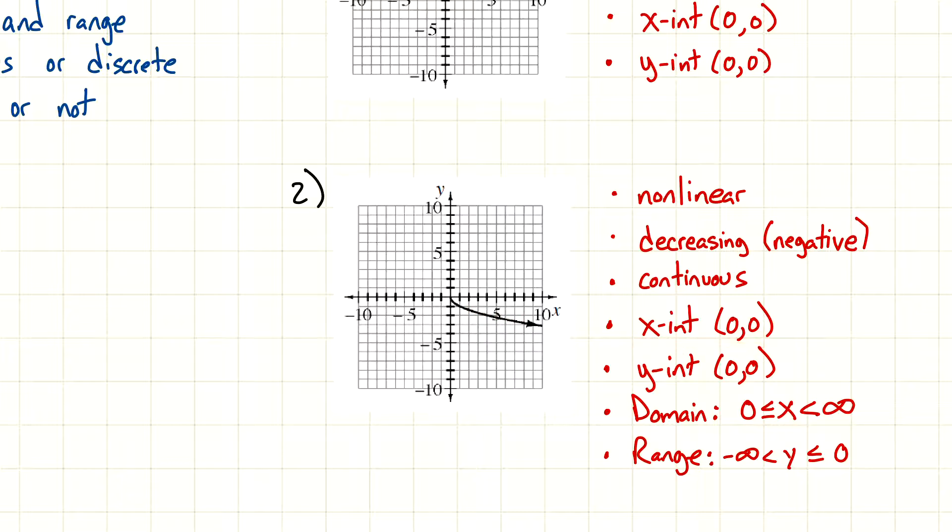And continuous, you'll notice it's a connected line. It's not a bunch of points that are not connected. X-intercept would be... This is the x-axis. Does it touch the x-axis? Yeah, it does. It does right here at 0, 0. And the y-intercept would be... Does it touch the y-axis? Well, that's the exact same point. Just like the previous example.